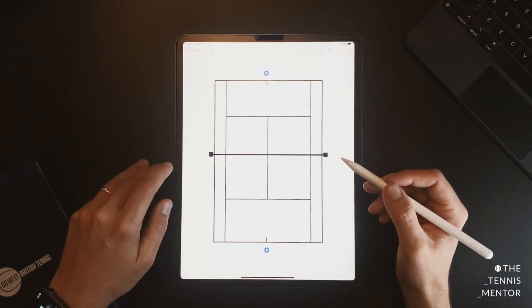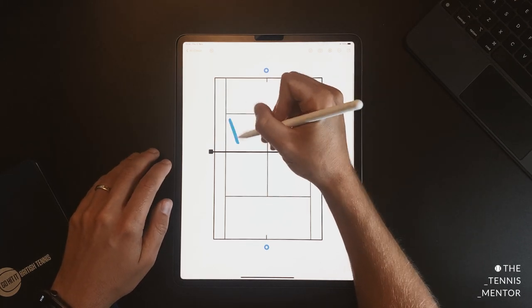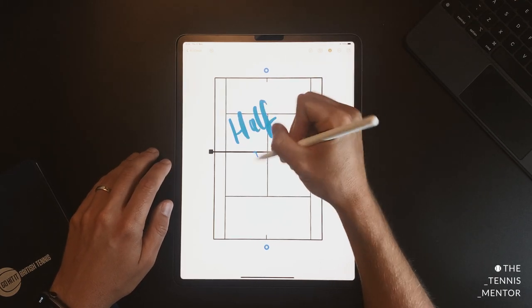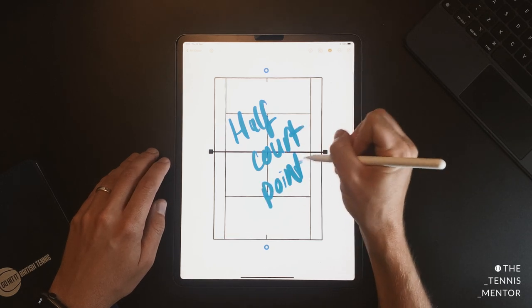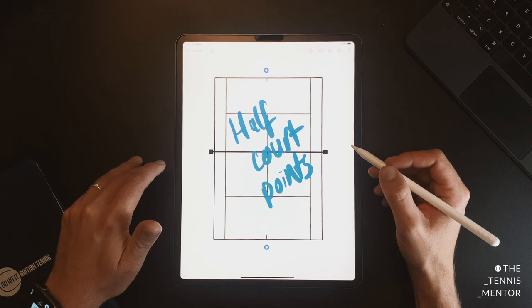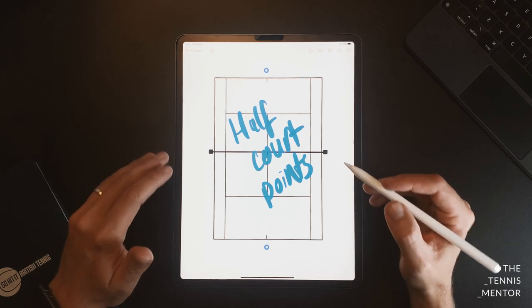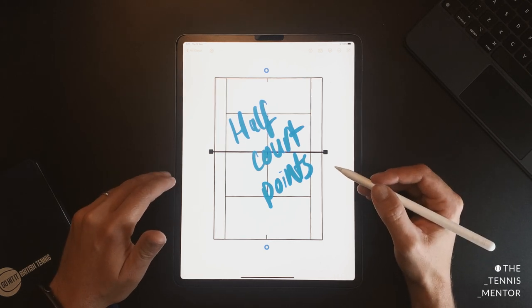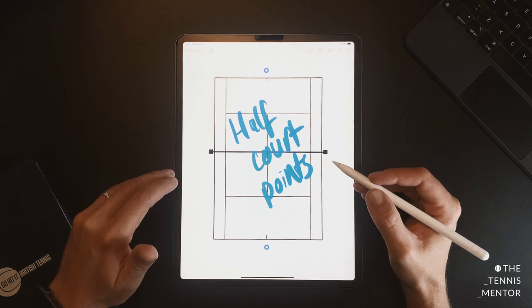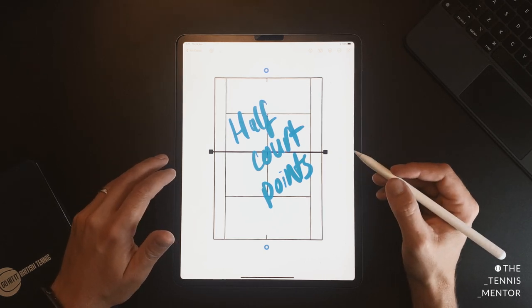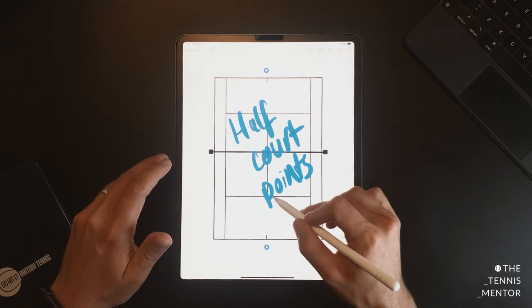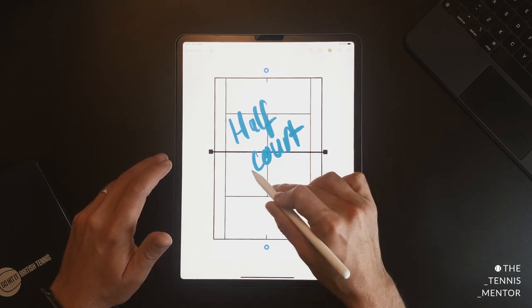The third exercise in my top three is very simple. It's half court points. Now, the reason I like playing half court points, it focuses you on your consistency and the quality of your ball striking. Now, there aren't as many tactics that you can put into play when you're playing on half a court purely because you have less space. There's not as much room for you to hit winners.